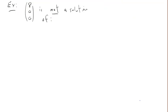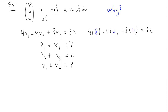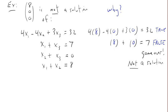(8, 0, 0) is not a solution of the following system. We take the first equation, substitute 8 for x1, 0 for x2, 0 for x3 — that's a true equation. But if we do it with the second equation, substituting 8 for x1 and 0 for x3, we end up with a false equation. If any of the equations are false, then this is not a solution of the system. We don't even need to check the other equations.